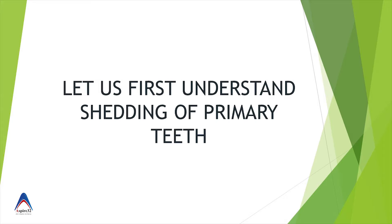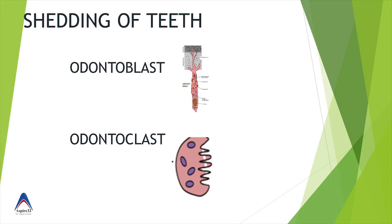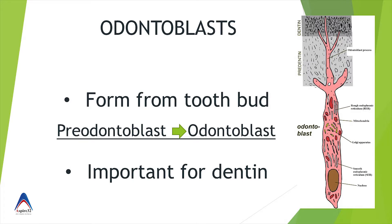Before understanding why we don't do pulp capping in primary teeth, let us go through some important aspects of the shedding process. When it comes to shedding of deciduous teeth, there are two cells involved: odontoblasts and odontoclasts. Everybody thinks it is mostly odontoclasts, but it is a very important MCQ that both odontoblasts and odontoclasts are involved, because there is also a moment of repair and then resorption. Odontoblasts reside in the pulp and originate from ectomesenchymal cells.